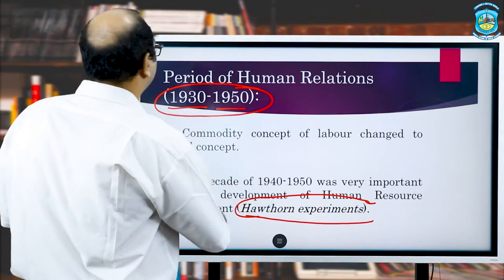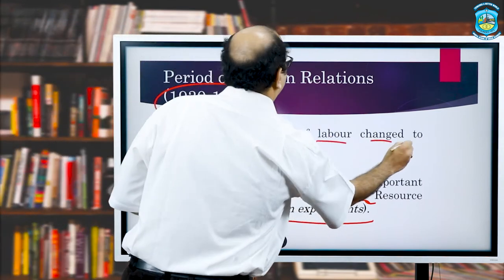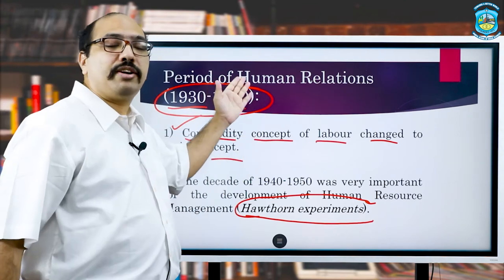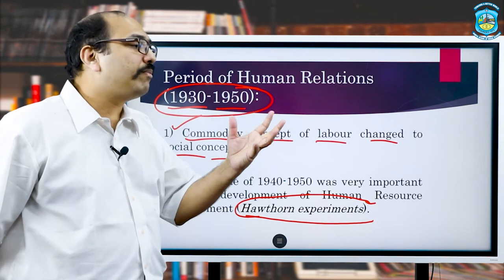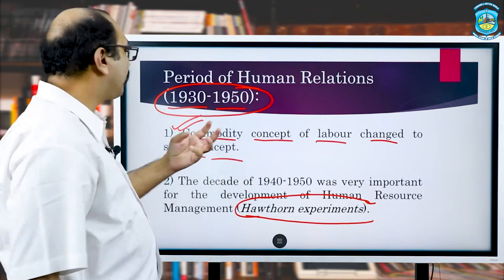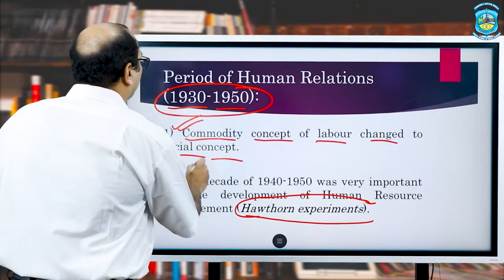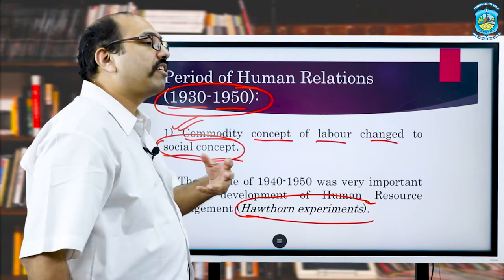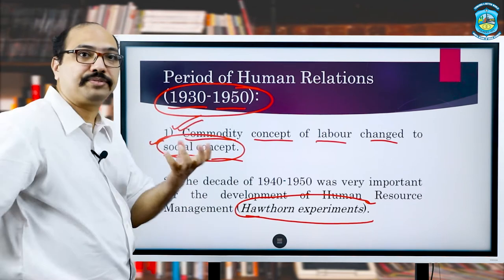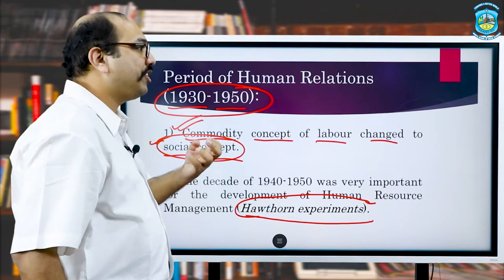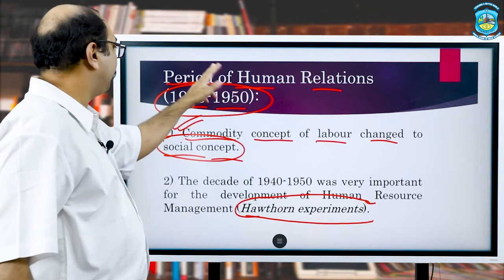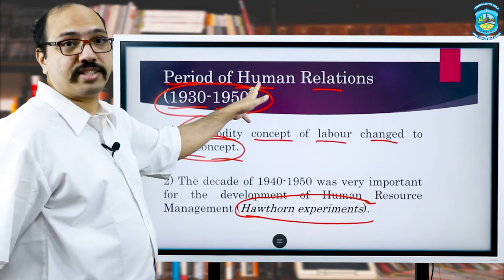As someone rightly said, the commodity concept of labor changed to social concept. Prior to this time period, human resources were treated like a commodity, but the view changed to a social concept — people started treating them as a social resource, something human, something which needs human treatment. So this period is known as the period of human relations.